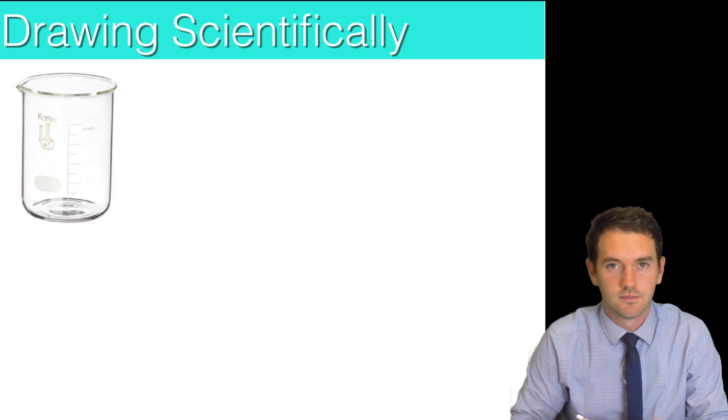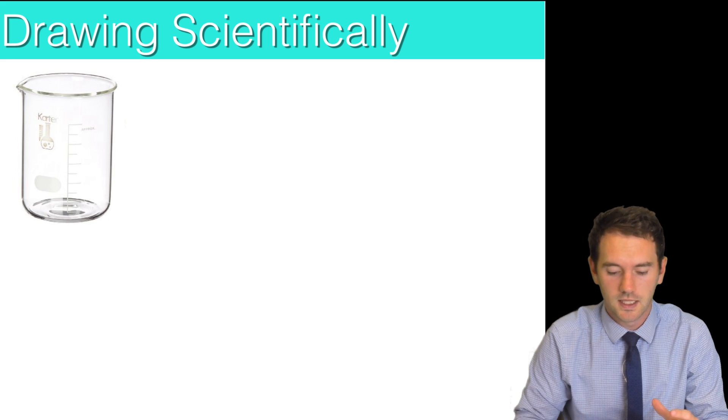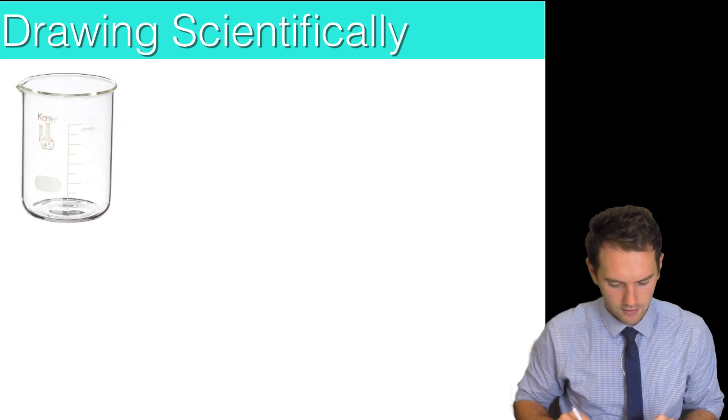What we've got here is a beaker. You can see it's a three dimensional version, it's actually a photo of a real beaker. So what would that look like in your prac report? Well basically I've got my ruler here and I'm going to show you.